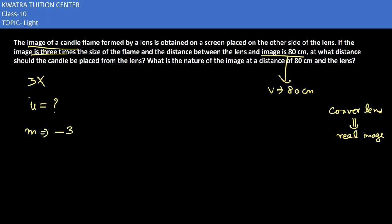V is given to us as 80 cm. We will use magnification formula, which is V over U. Magnification is minus 3, and V is 80, so U would be 80 divided by minus 3, which equals minus 26.67 cm.